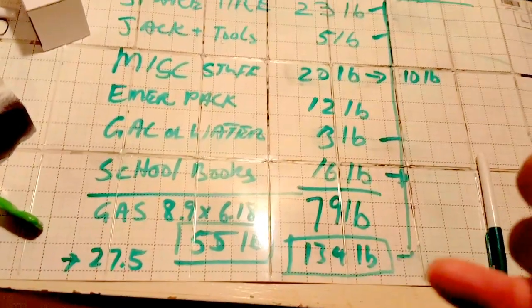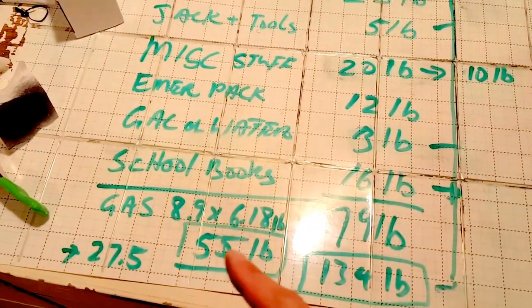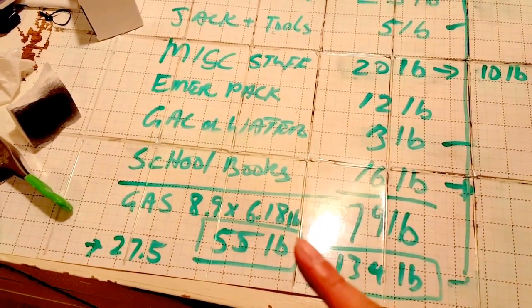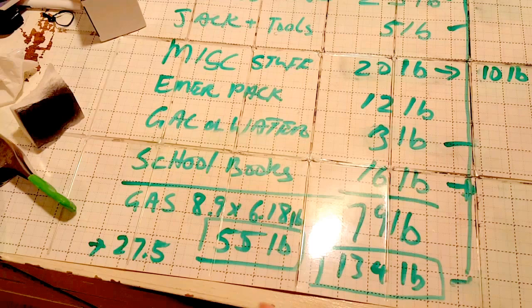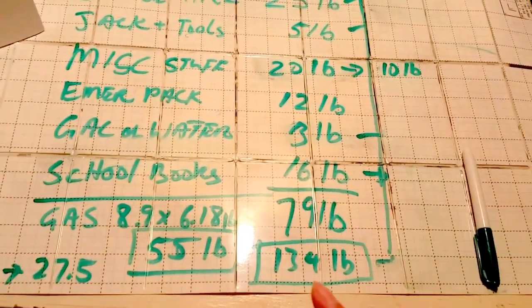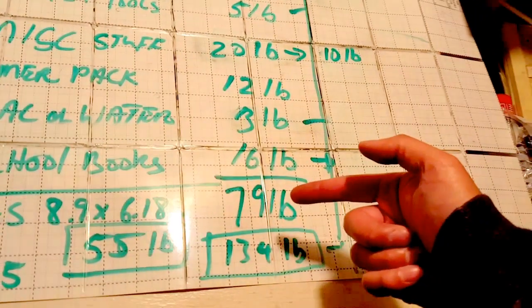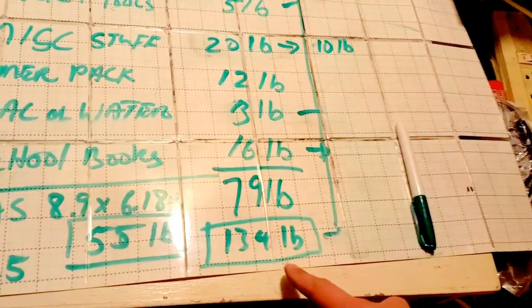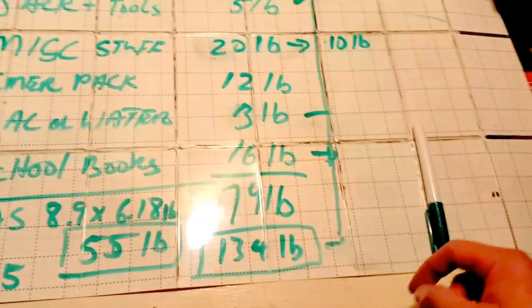Gas. I usually keep a full tank of gas topped off. We carry about 8.9 gallons of gas at 6.18 pounds a piece. So I usually carry about 55 pounds of gas. Total for the stuff is about 79 pounds. For a total with the gas, so a full tank of gas, is about 134 pounds.